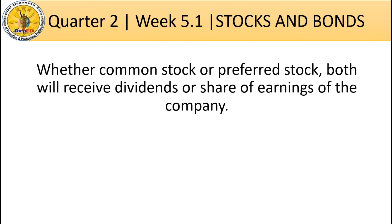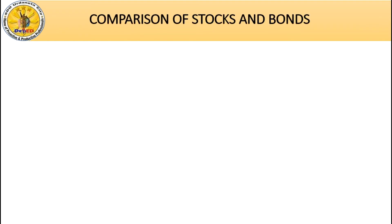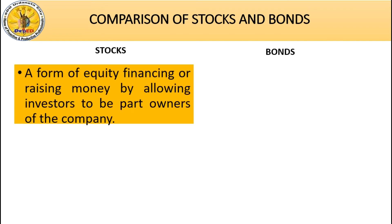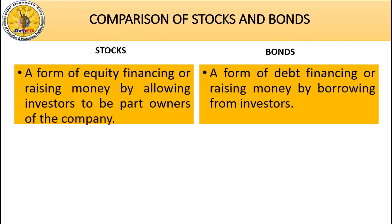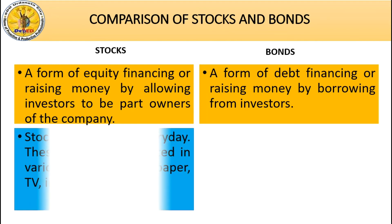Take note that whether common stock or preferred stock, both will receive dividends or a share of the earnings of the company. Now let's have the comparison between stocks and bonds. Stocks are a form of equity financing — raising money by allowing investors to be part owners of the company — while bonds are a form of debt financing, or raising money by borrowing from investors.